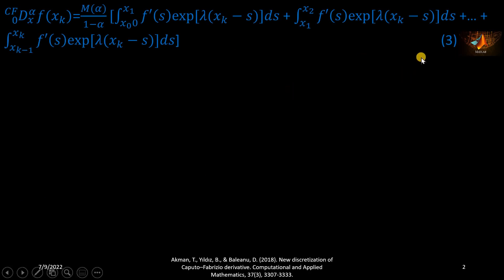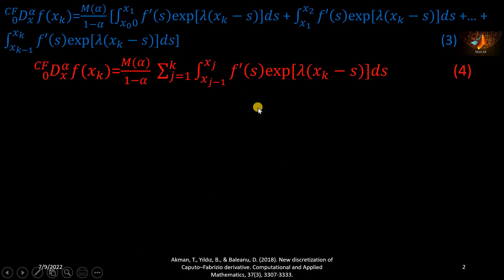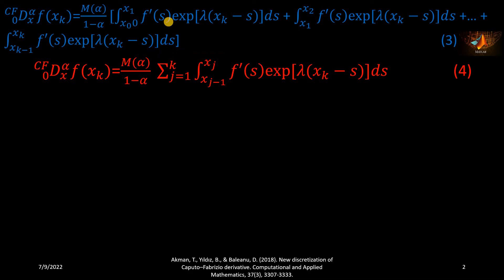In equation number 3, the first integral is from x_0 to x_1, the second is from x_1 to x_2, and so on. In equation 4, I have written equation 3 in compact form with the help of summation notation, where j starts from 1 and ends at k. If you open equation number 4 you will be back to equation number 3.